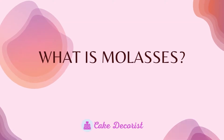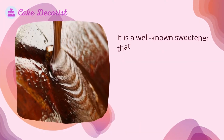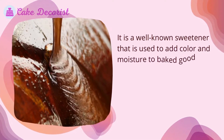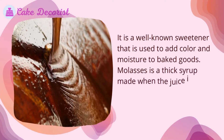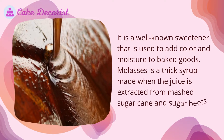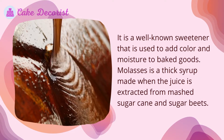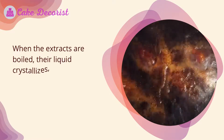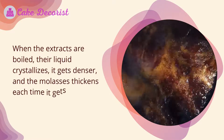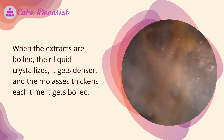What is molasses? It is a well-known sweetener used to add color and moisture to baked goods. Molasses is a thick syrup made when juice is extracted from mashed sugar cane and sugar beets. When the extracts are boiled, their liquid crystallizes, gets denser, and the molasses thickens each time it gets boiled.